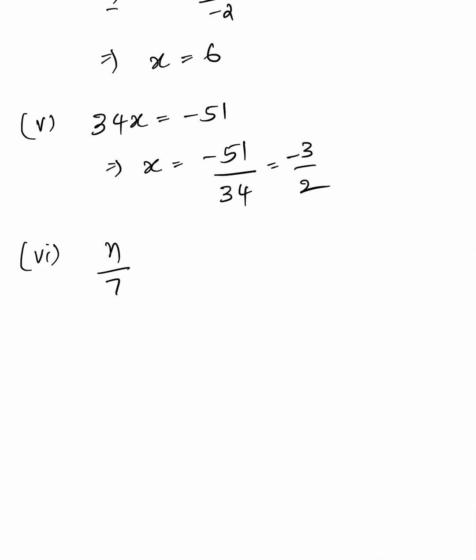Sixth: n divided by 7 equals minus 3, so n equals 7 multiplied by minus 3, giving n equals minus 21.